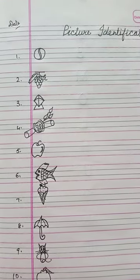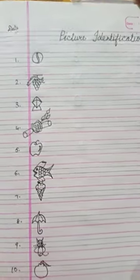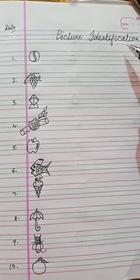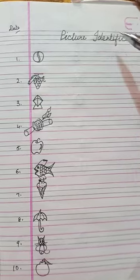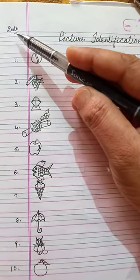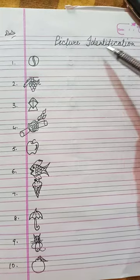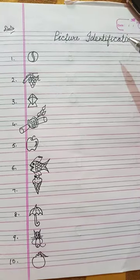First of all, take out your English notebook and pencil. In this video we are going to learn picture identification. First of all, you will write your date, and the next line you will write picture identification.